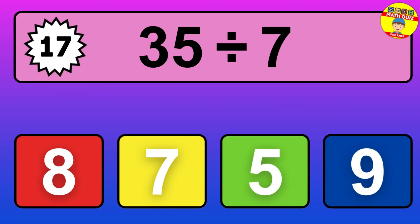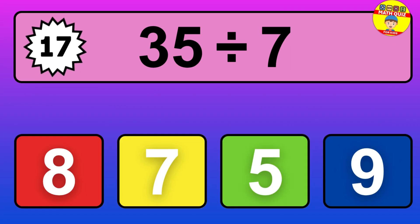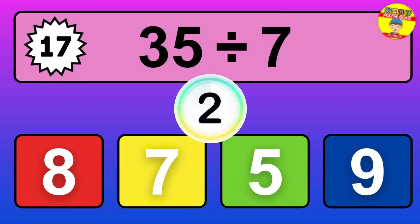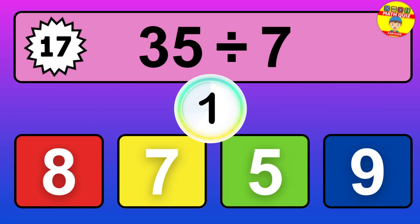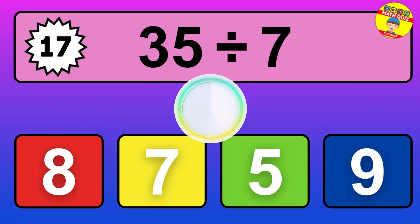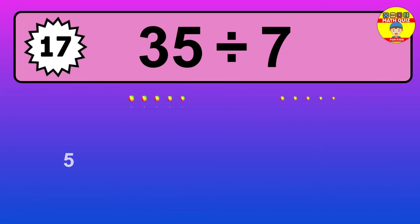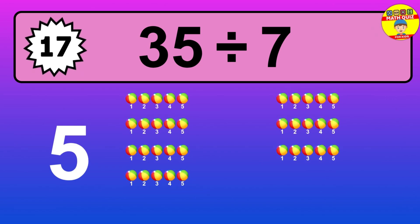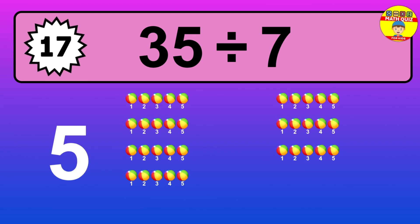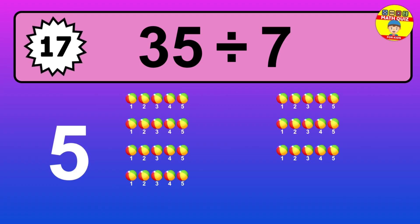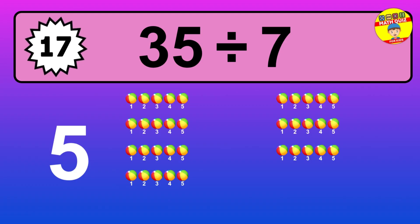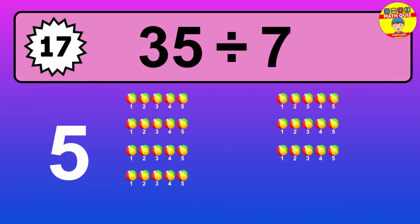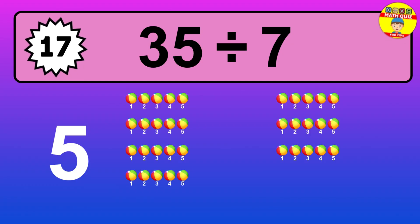35 divided by 7 — it's time to think. Let's go to the solution. Divide the number 35 by 7. Each group contains 7 units, so dividing 35 by 7 results in 5 equal groups. Thus, the result is 35 divided by 7 equals 5.